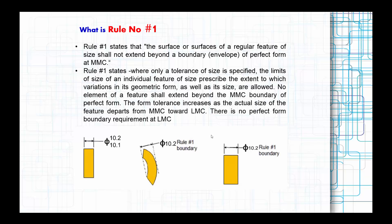Where only a tolerance of size is specified, the limits of size of an individual feature of size (FOS) prescribe the extent to which variation in its geometric form as well as its size are allowed.